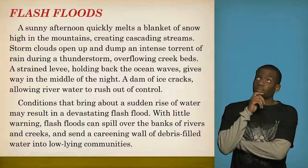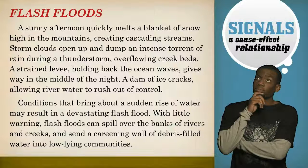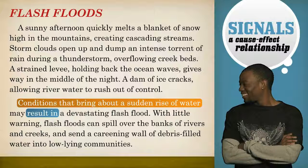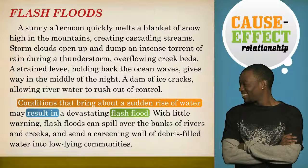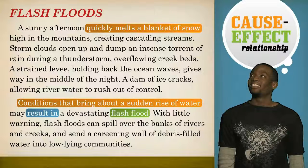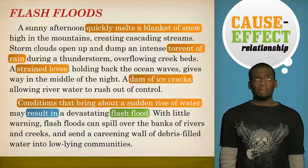Interesting. I realize the author is talking about flash floods from the section title, so this helps me predict what I'll be reading about. I wonder what causes flash floods. Well, just look at the signal words. The words 'result in' signal a cause-effect relationship. The conditions that bring about a sudden rise of water result in — or cause — a devastating flash flood, which is the effect. When I re-read the first paragraph, I understand what those conditions are: quickly melting snow, torrential rainfall, broken levees, and ice dam failure are all causes of flash floods. The signal words help me notice the important ideas the author wants to convey.